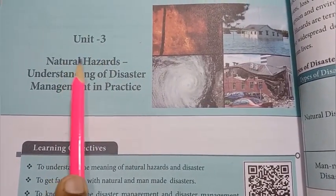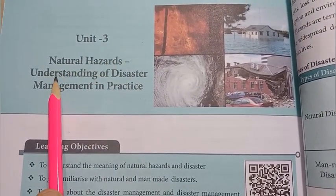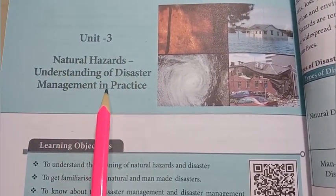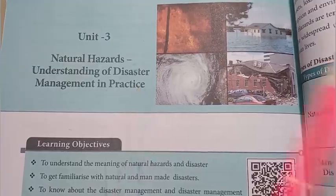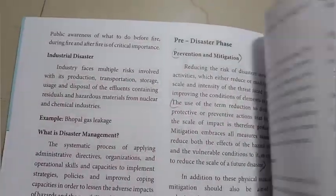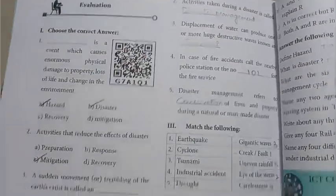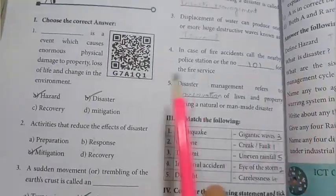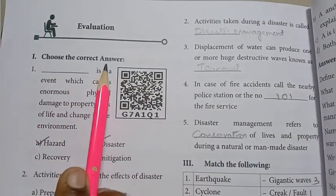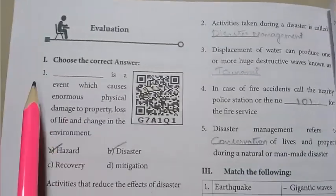Unit 3: Natural Hazards - Understanding of Disaster Management in Practice. Listen to the textbook exercise. Turn to page 180. From section A, choose the correct answer.